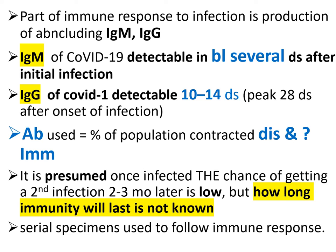Part of the immune response is production of IgM and IgG. IgM is detectable in blood several days after initial infection; IgG is detectable in two weeks. Antibodies are used to estimate the percentage of the population contracting the disease and immunity. Once infected, the chance of a second infection during the following three months is presumed low, but how long immunity lasts is not yet known. Indeed, some have contracted the disease twice within six months.